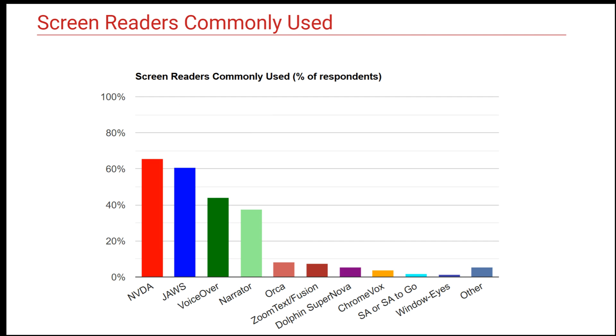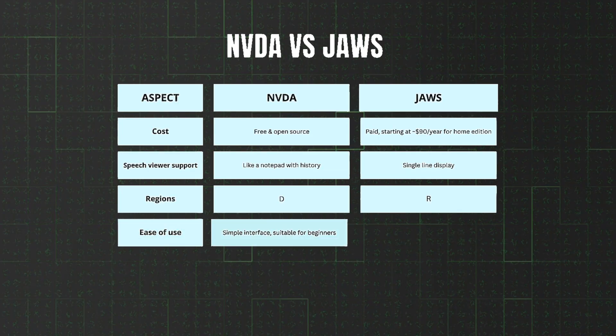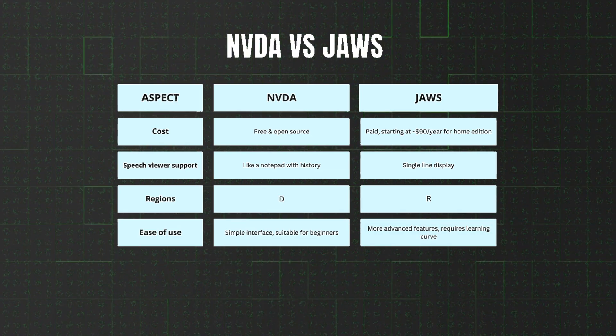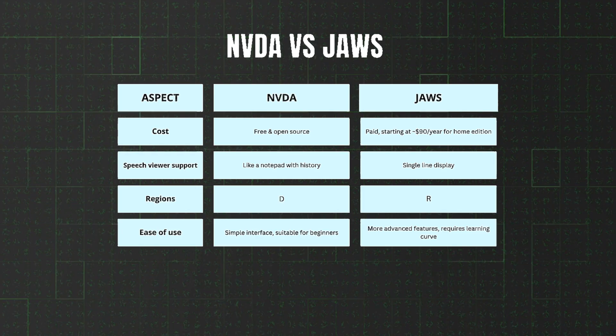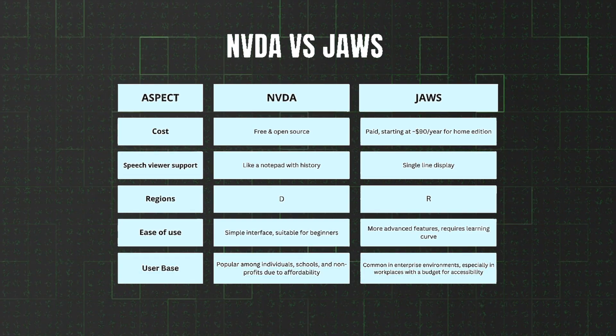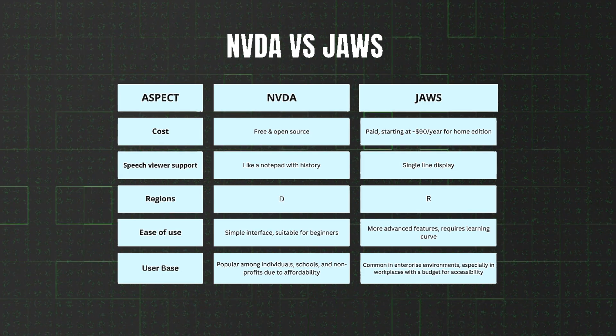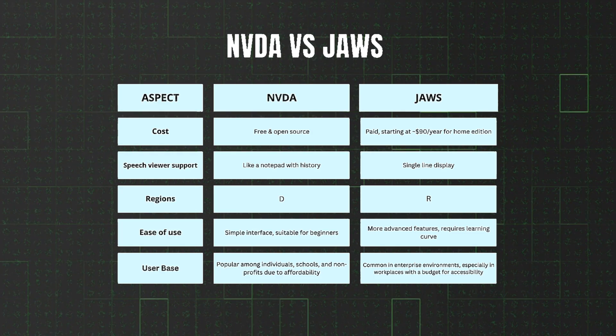Did you know? NVDA is used by over 65% of screen reader users worldwide, versus 60% of JAWS users, according to the latest WebAIM survey. This signifies a major shift in the screen reader landscape, highlighting growing preference for cost-effective, easy-to-use, community-driven tools like NVDA. In terms of ease of use, NVDA is much easier and best suited for beginners, while JAWS is really powerful with advanced features for professionals. NVDA is popular among individuals, schools, and non-profits due to its affordability, whereas JAWS is commonly used by larger enterprises.